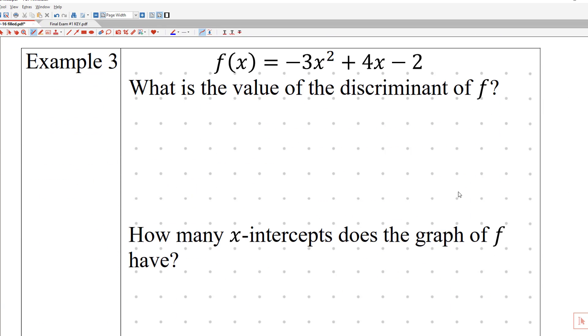Example number three. Now we have a function. So -3x² + 4x - 2. Notice that it's in the correct form. It has descending degrees. It's x², then x, then a constant term. So it's in the right form. We don't have to change anything around, which is nice. And I need to find the discriminant.